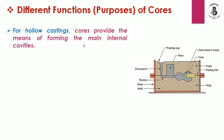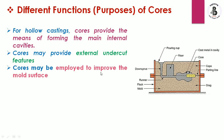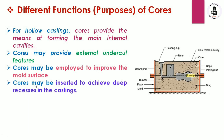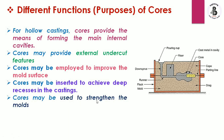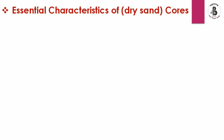For hollow castings, cores provide the means of forming the main internal cavities. Cores may also provide external undercut features. Cores may be employed to improve the mold surfaces. Cores may be inserted to achieve deep recesses in a casting. Cores may be used to strengthen the molds. Cores may also be used to form the gating systems of large-size molds.